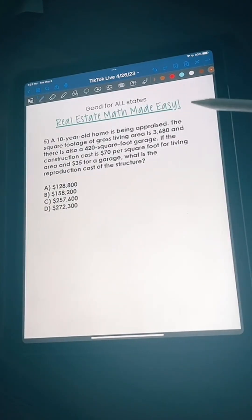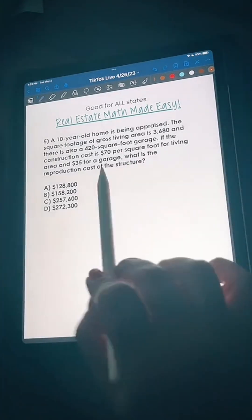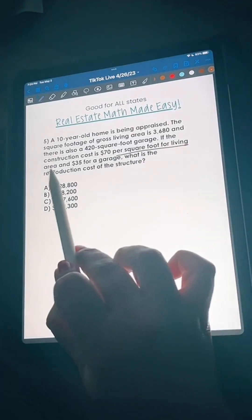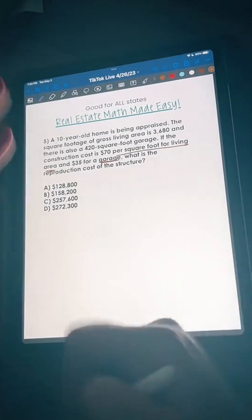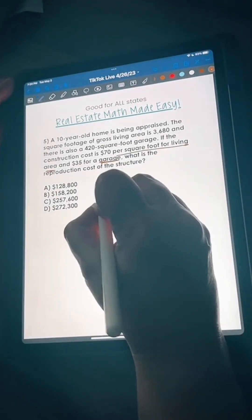Next one says a 10 year old home is being appraised. The square footage of gross living area is 3,680 and there is also a 420 square foot garage. If the construction cost is 70 dollars per square foot for living area and 35 dollars for a garage, what is the reproduction cost of the structure? We're going to break it down into two different things. We got to find how much it's going to cost for the living area and then how much for the garage, and then add them up.